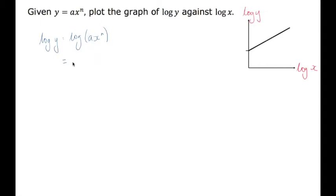So first of all, you have to use another log rule, which allows you to split them up. So we've got log of a plus log x to the n. Now you can bring that n down. So log of a stays the same, plus bring that n down, and we have log x.